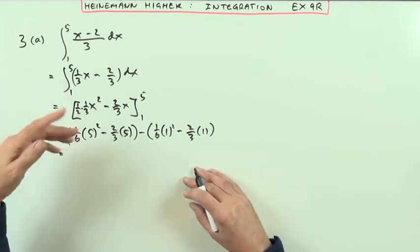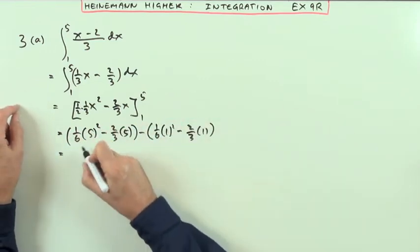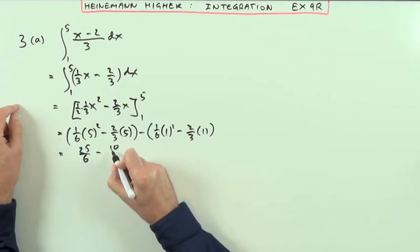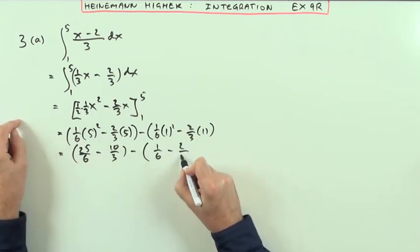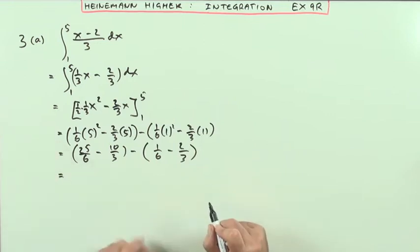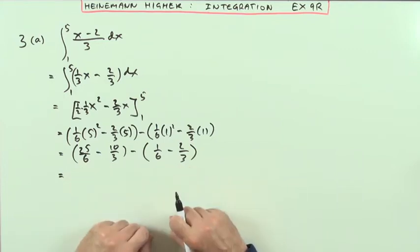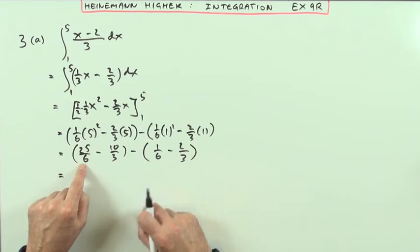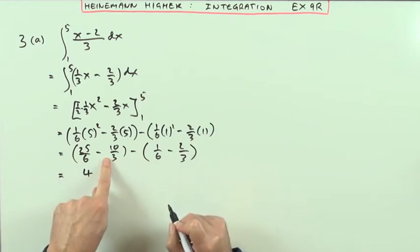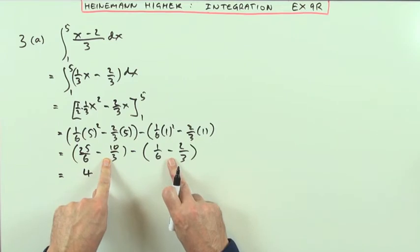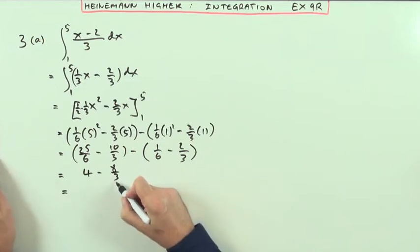You do a little bit of integration — just add one to the power, divide by the power — and then it turns into big arithmetic usually involving fractions. So that's 25 over 6 minus 10 over 3, and that's 1 over 6 minus 2 over 3. The sixes can go together and the thirds can go together: 25 over 6 minus 1 over 6 gives 24 over 6, which is 4, and negative 10 over 3 plus 2 over 3 gives minus 8 over 3.